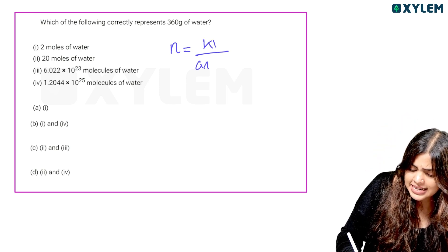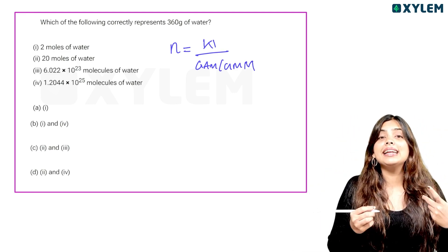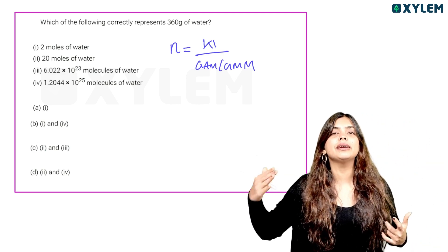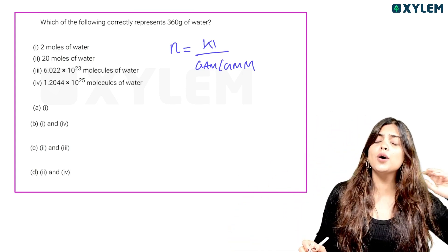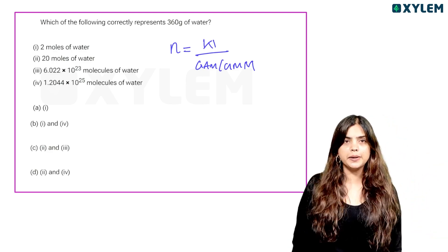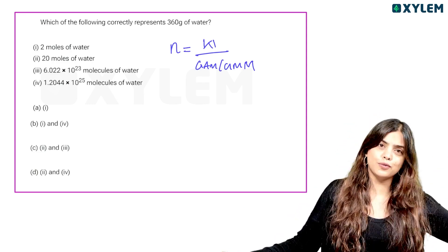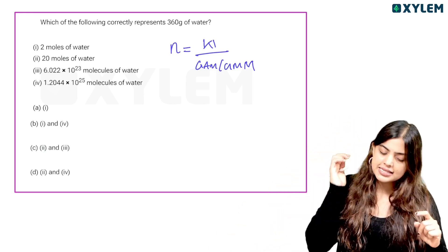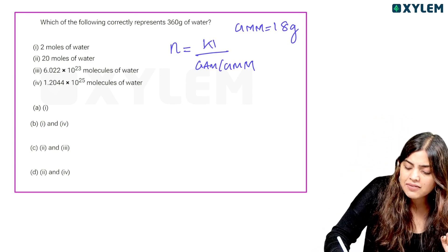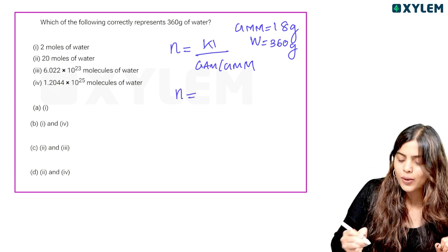The number of moles is equal to W by GAM — that is, given mass divided by gram molecular mass. The gram molecular mass of water is 18. So 1 mole of water is 18 grams, and 1 gram molecular mass of water is 18 grams.